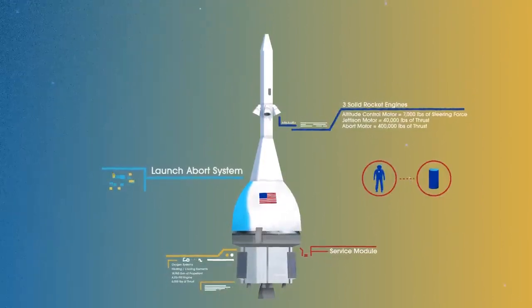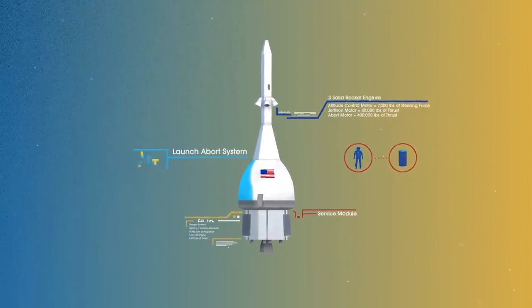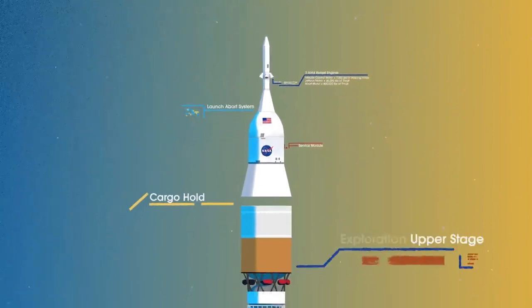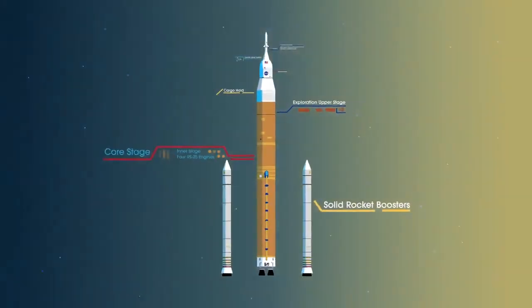To accomplish the task of launching our crew and heavy payloads, NASA is building the Space Launch System, comprising of a cargo hold, an exploration upper stage, a massive core stage, and two extended solid rocket boosters.